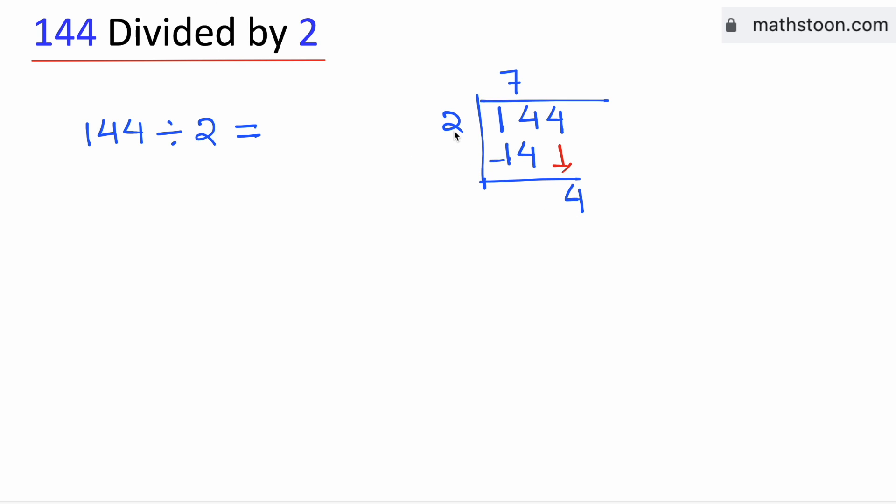Now we know that 2 times 2 is 4. Subtract, we get 0. As we have obtained the number 0 and there is no number to bring down here, we will stop. Therefore, 144 divided by 2 is equal to 72. And this is our final answer.